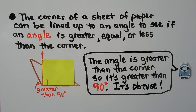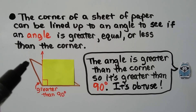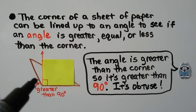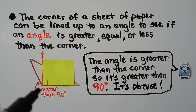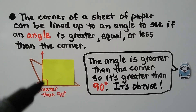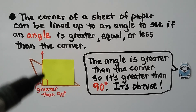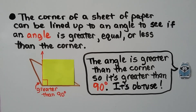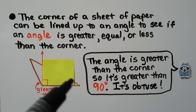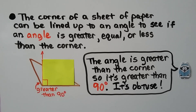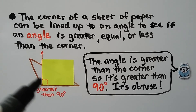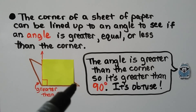The corner of a sheet of paper can be lined up to an angle to see if it is greater than, equal to, or less than 90 degrees. We have this brown triangle and line up the yellow paper. We can see this angle is sticking out from the side of the paper, so it is greater than 90 degrees — it's obtuse. And this angle is going underneath the paper, so we know it is less than 90 degrees — it's acute.